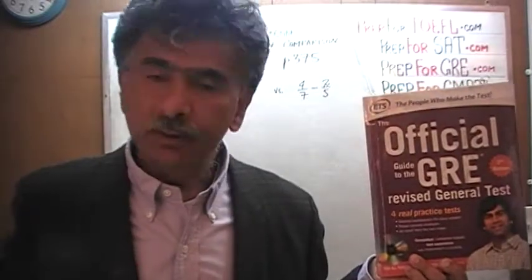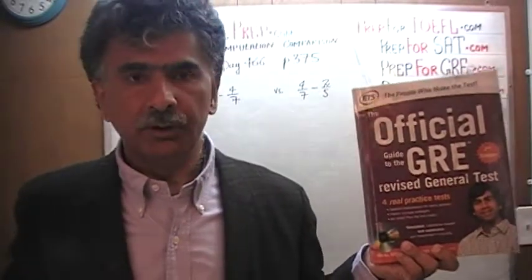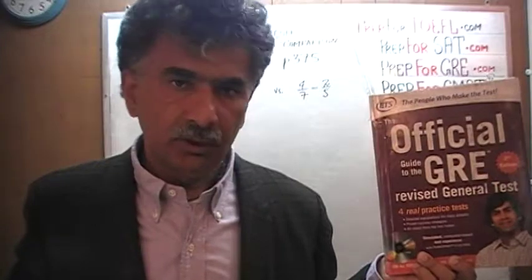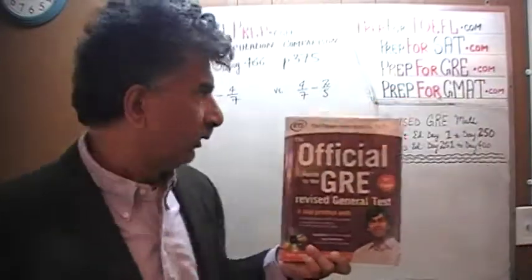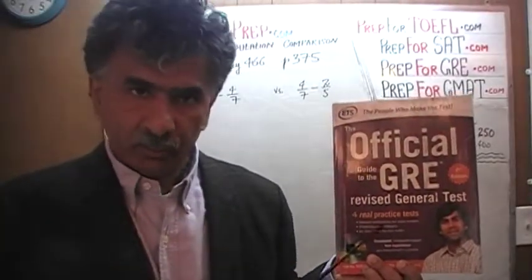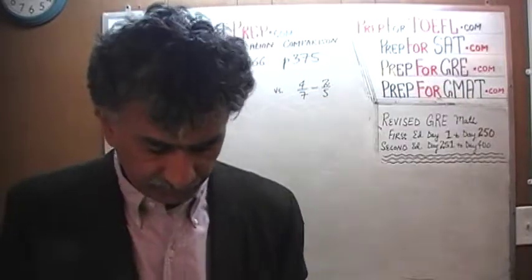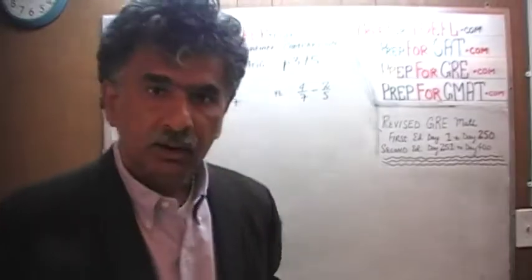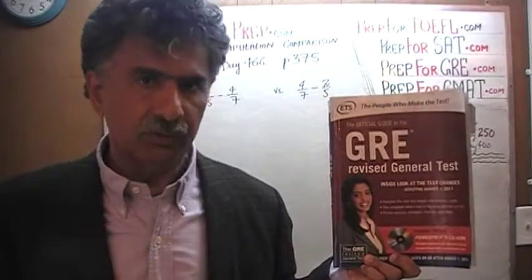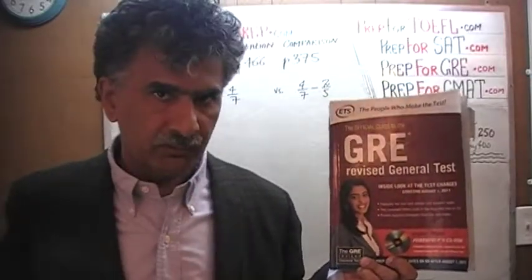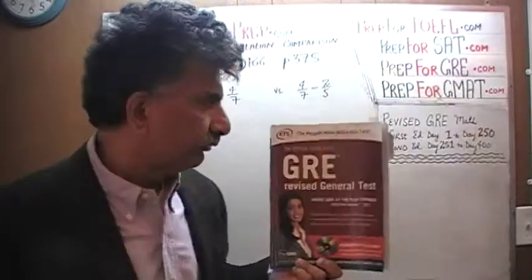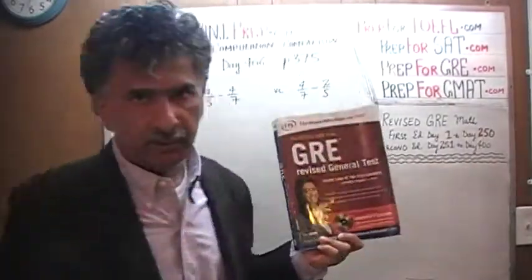If you do not own this book already, purchase one immediately — you are going to need it. We have finished doing almost all the problems. If any problem gives you difficulty, you will find solutions to almost all problems from day 251 through 400. This second edition contains in most cases exactly the same problems appearing on exactly the same page numbers as the first edition. You will find all the original solutions from day 1 through 250.